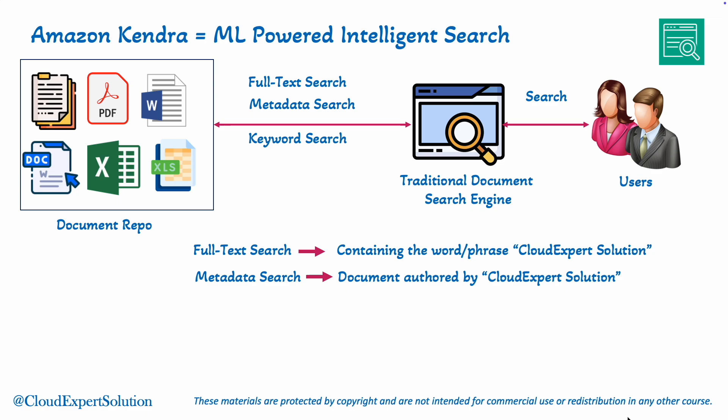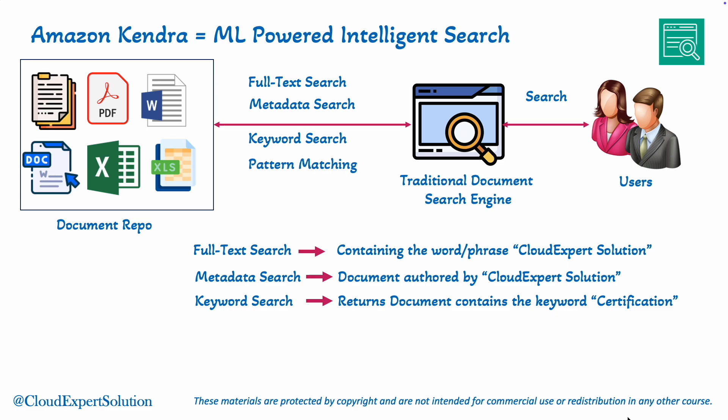Then using Keyword Search — it finds exact matches for specific terms, often without understanding the context. For example, if I search for the word 'certification,' it will return wherever that word appears. And last but not least, Pattern Matching — it locates documents using patterns or regular expressions, such as identifying email addresses or phone numbers.